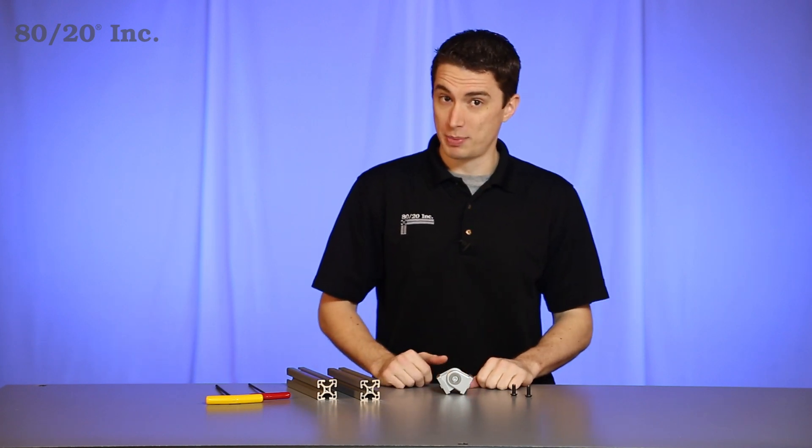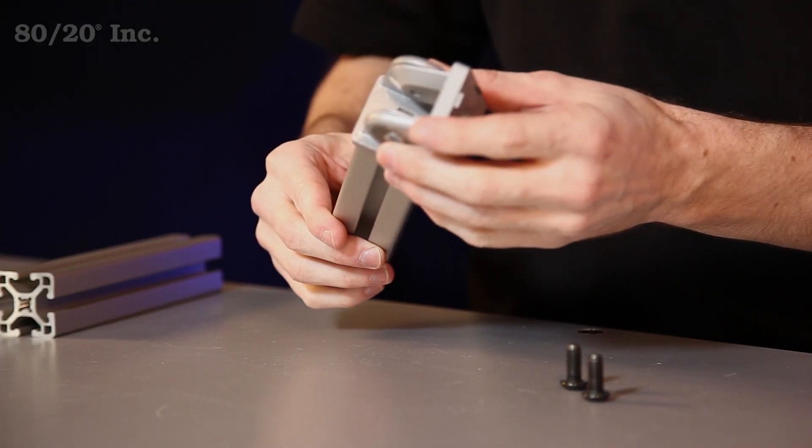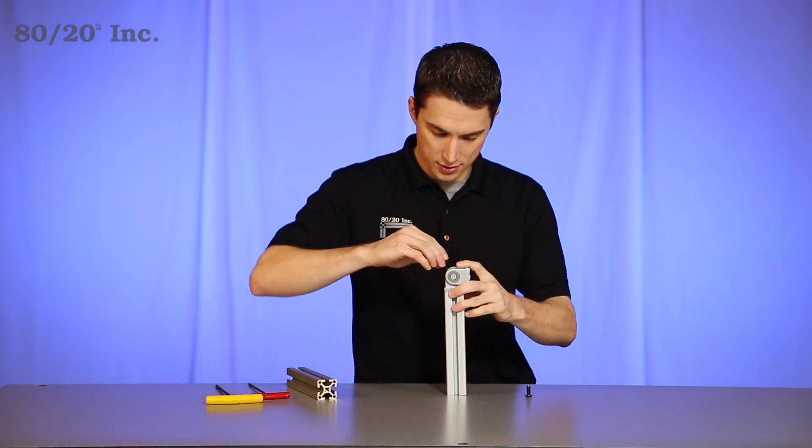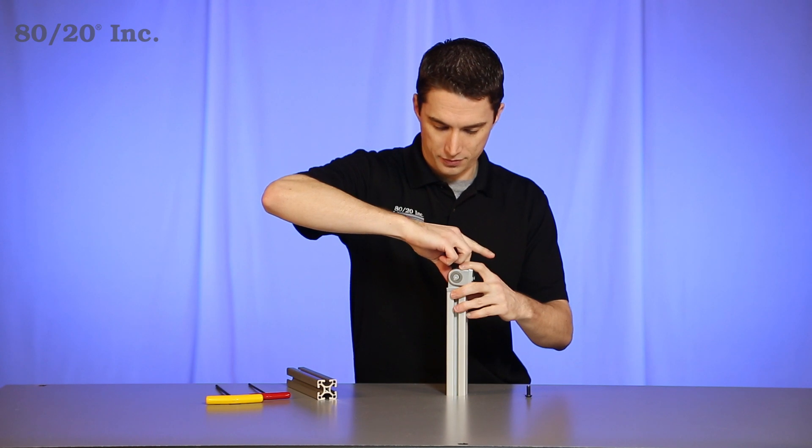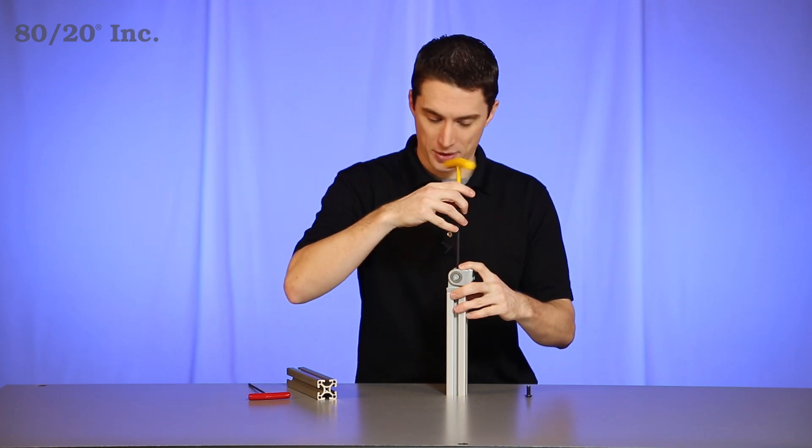Now when it comes to installing the pivot joint, you'll start with one end tap bar. You'll take your pivot joint and place it right over that end tap. We'll hold that into place, take our bolt and feed it into the end tap. We'll grab our wrench and tighten down that half of the pivot joint.